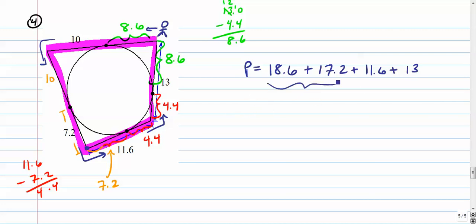So let's see. These two is 35.8. These two is 24.6. Add these two together now, let's see, it's 59 plus 1.4. 60.4 is the perimeter.